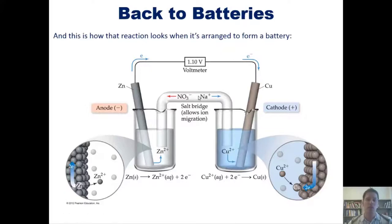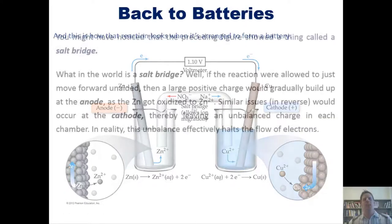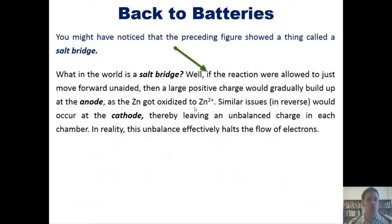If your reaction were allowed to just move forward unaided, then a positive charge would gradually build up at the anode where zinc gets oxidized from zinc zero to Zn2+. Similar issues in reverse would occur at the cathode, thereby leaving an unbalanced charge in each chamber. In reality, this unbalanced charge would ultimately halt the flow of electrons.